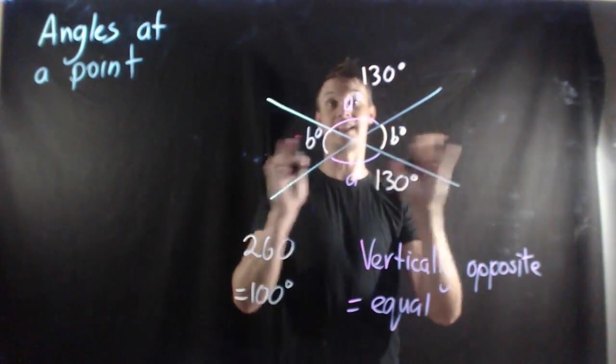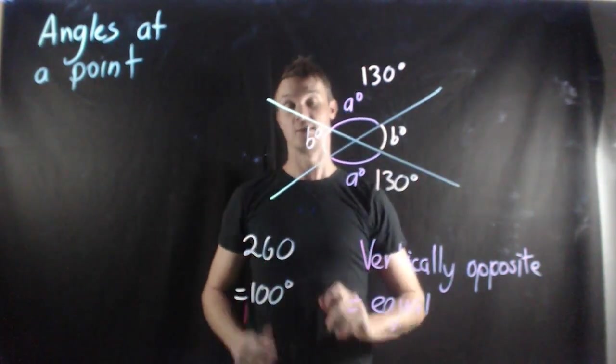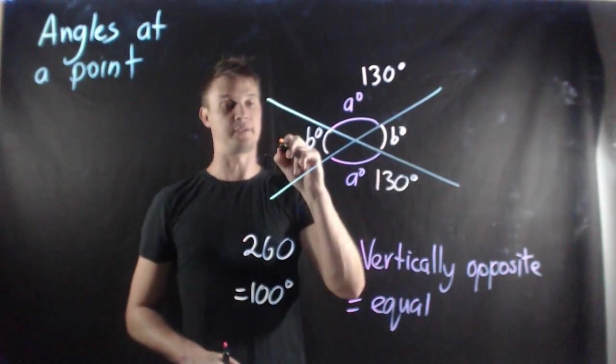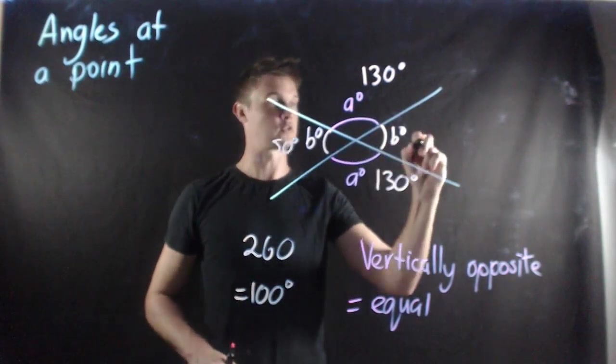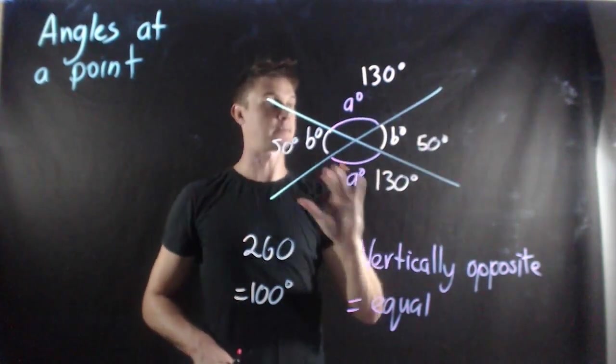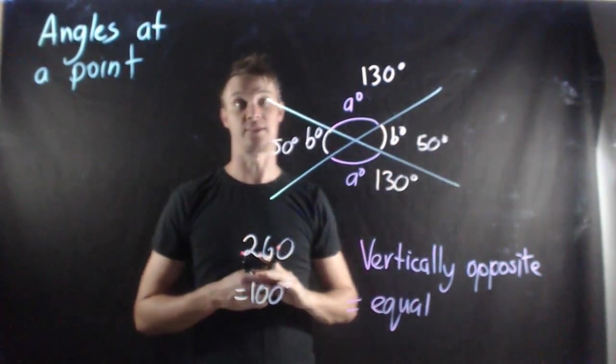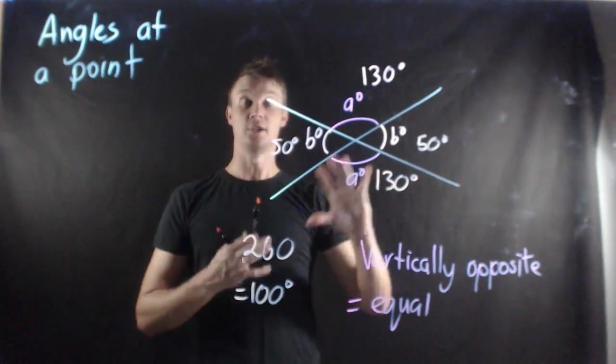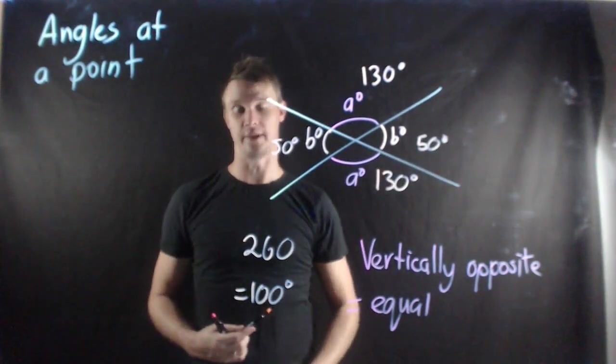And I know that these two angles here vertically opposite will be the same. So half of 100 would be 50 degrees. And what that should get me if I add all these up together is 360. So it's important that you understand vertically opposite because again it helps work out unknown numbers.